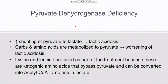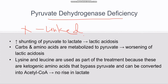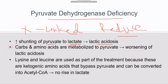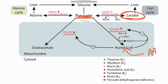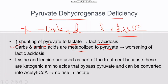Now let's talk about pyruvate dehydrogenase deficiency. This is an X-linked disorder in which the PDH complex activity is reduced. If it doesn't work, pyruvate cannot be converted to acetyl-CoA. Instead, pyruvate is majorly converted to lactate, causing lactic acidosis. Amino acids that are metabolized through pyruvate will also be shunted to lactate.